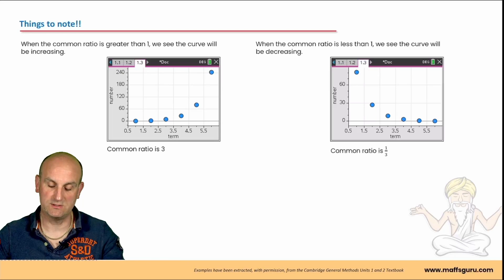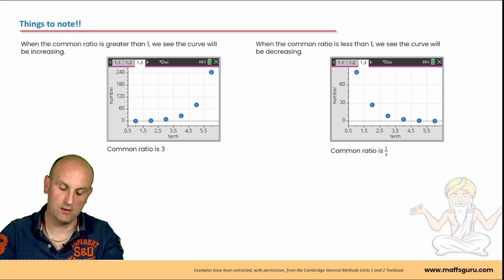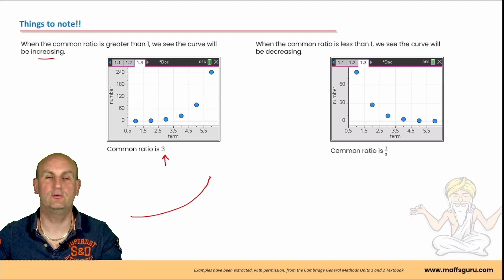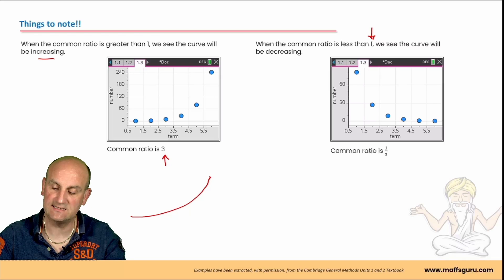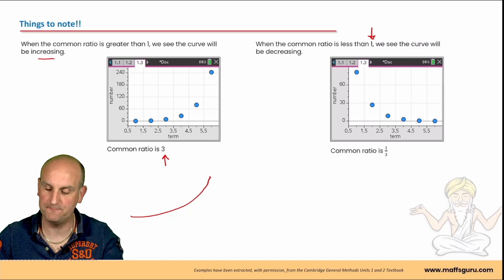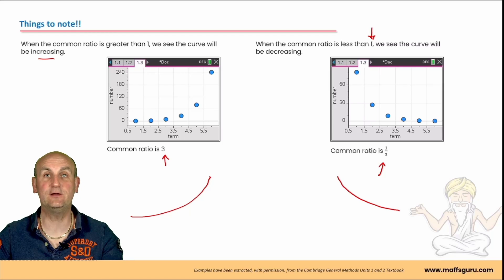Things to note: when the common ratio is greater than one, the curve is increasing — as with R equals 3 where the sequence grows. When the common ratio is less than one — a decimal or fraction less than one — the graph is decreasing, as with R equals a half.